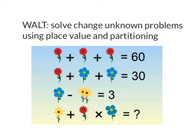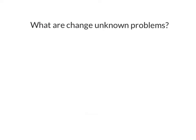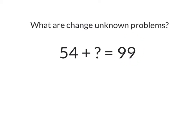We are learning to solve change-unknown problems using place value and partitioning. So the first thing you might ask is: what are change-unknown problems? This is an example where we know the start of the problem and we know the end, but we don't know what the number is in the middle. A change-unknown problem is where we don't know the value in the middle.